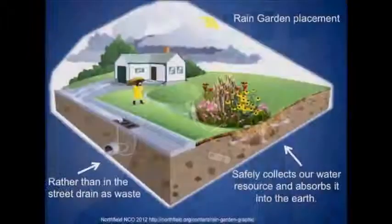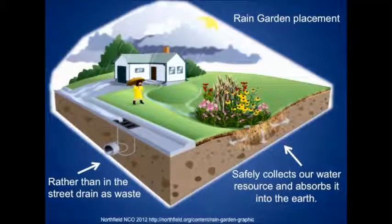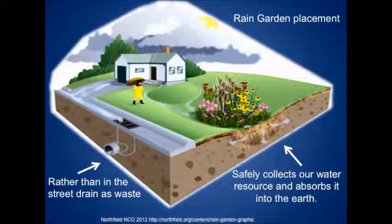This is what a typical residential rain garden looks like. Shown here is an herbaceous garden, but it could include shrubs and trees as well. Unlike a raised garden, which is most commonly seen throughout town, these are nestled into the ground so they can capture water and hold it, allowing it to dissipate either into the plant structure itself or into the ground.